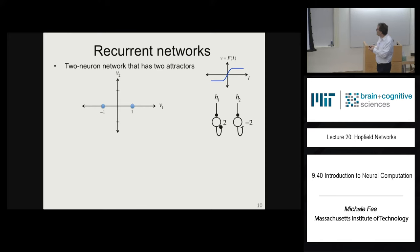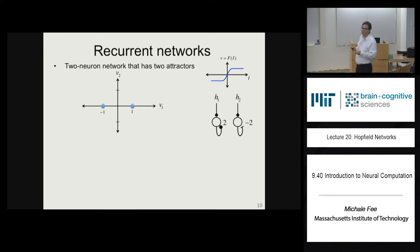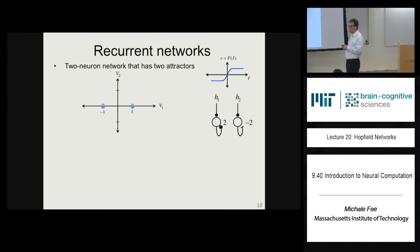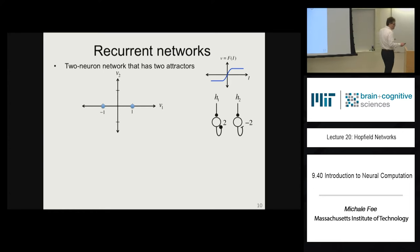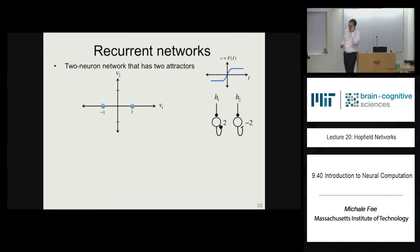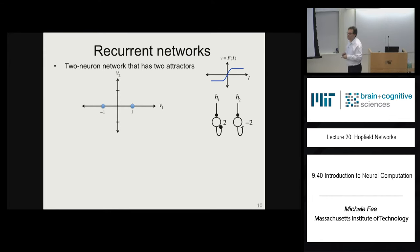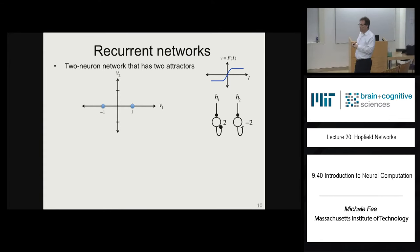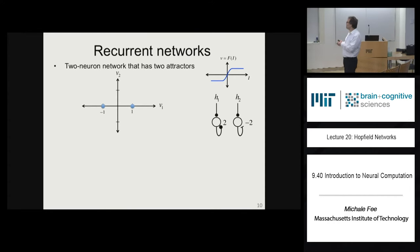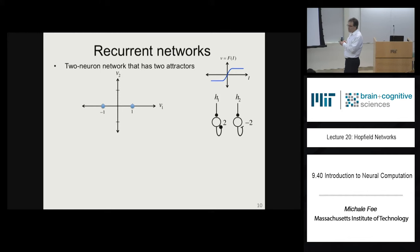If we make the second autapse also have strength 2, both neurons will have stable fixed points at 1 and minus 1. So the system can be in any one of four states: (1,1), (minus 1, minus 1), (1, minus 1), and (minus 1, 1). Each time we add a neuron with a recurrent eigenvalue greater than 1, we add more possible states to the network.